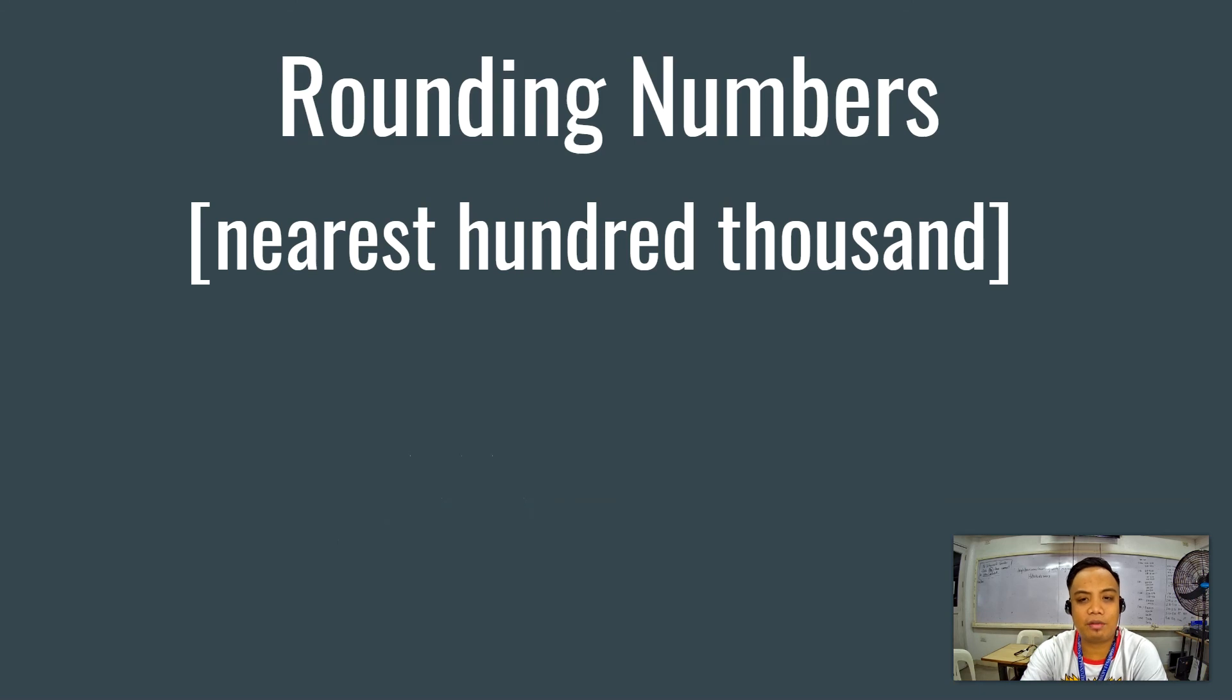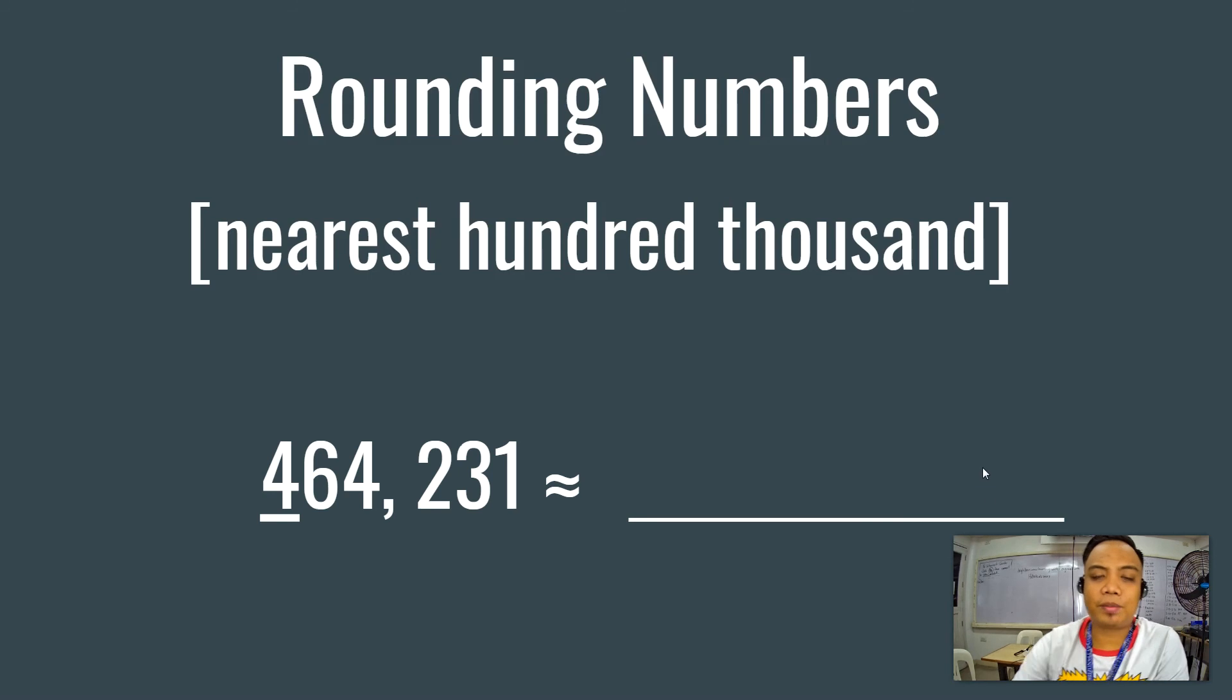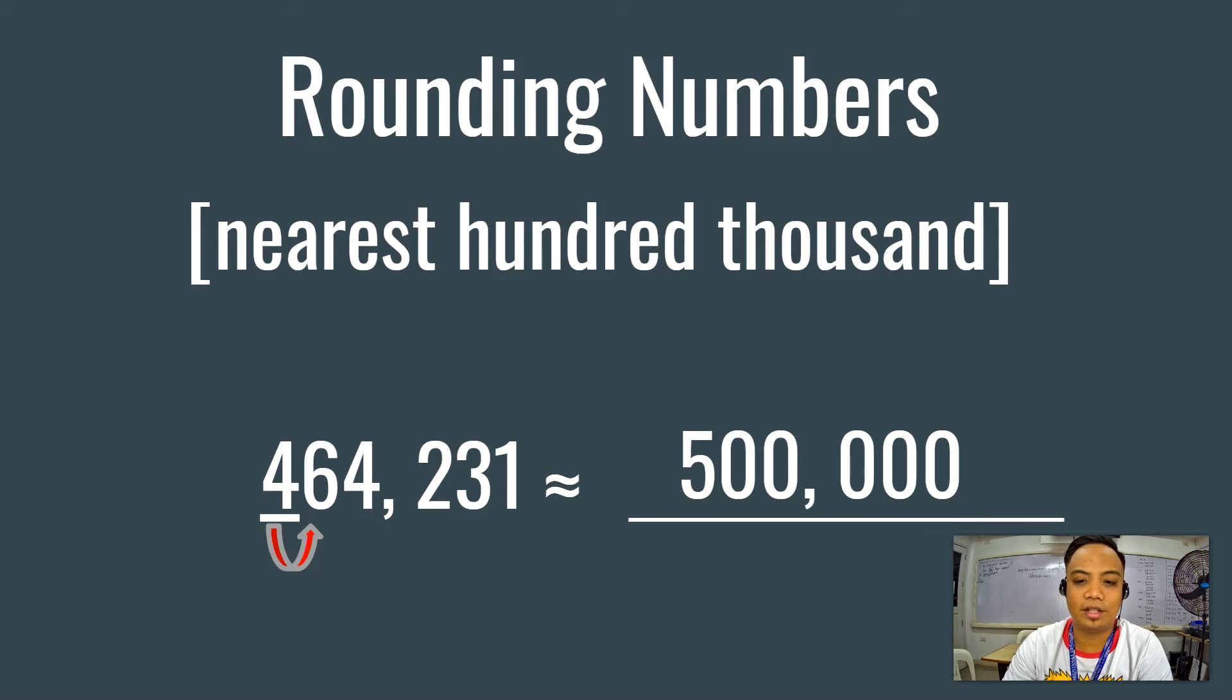Let us now try rounding numbers to the nearest hundred thousand. Locate the digit. And what is that? Correct. It's number 4. How about the preceded number of the digit? We have here the number 6. Should we round this down or should we round this up? Correct. When we round this number to the nearest hundred thousand, the number is 500,000.